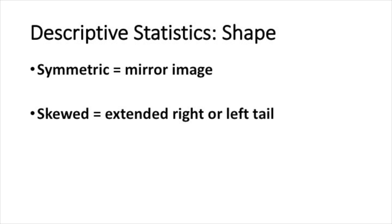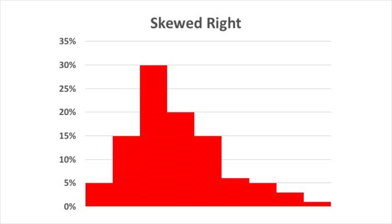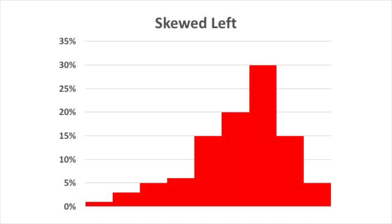So how are these histograms different? The first thing that might come to mind is that they have a different shape. The first histogram is what we call symmetric — it had a mirror image. The second histogram is skewed to the right, because the tail extends out farther to the right than to the left. People sometimes confuse this because the highest bar is on the left side, but skewness is determined by how far out the tail goes. The third histogram was skewed to the left because the tail extends farther to the left than to the right.